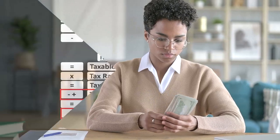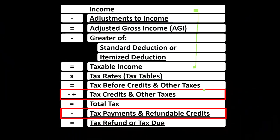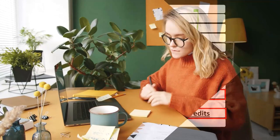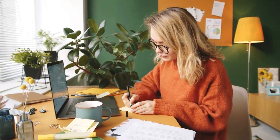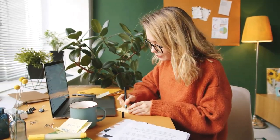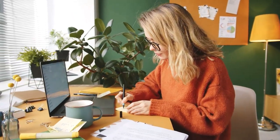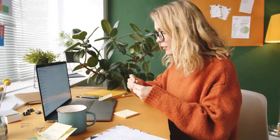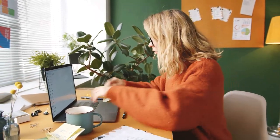Finally, we're down to where the credits are, as well as other taxes like self-employment tax, and then we apply the payments — which might be in the form of withholding or estimated tax payments — to get to the tax refund or tax due.